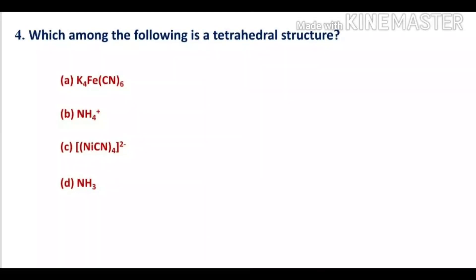The fourth question: which among the following is a tetrahedral structure? Option A, K4Fe(CN)6; option B, NH4+; option C, Ni(CN)4 2−; option D, NH3.